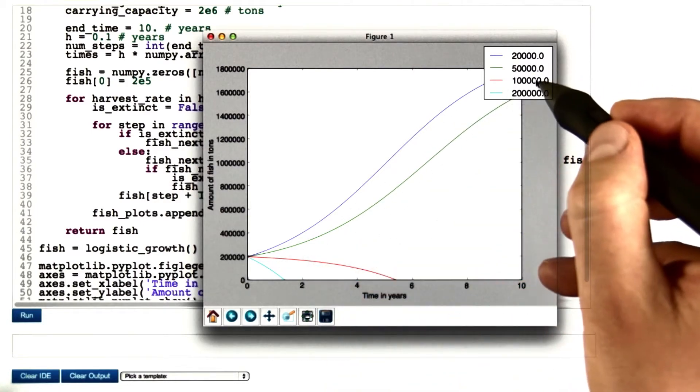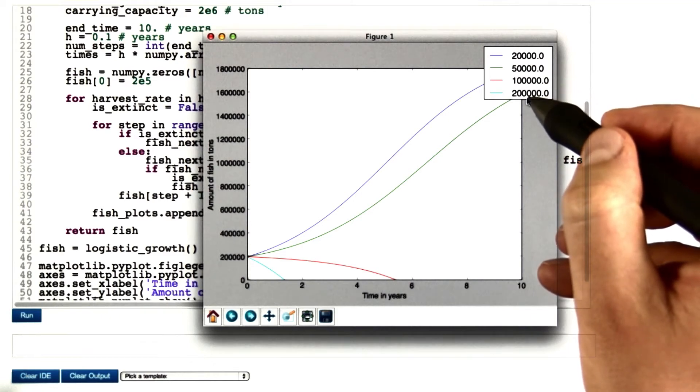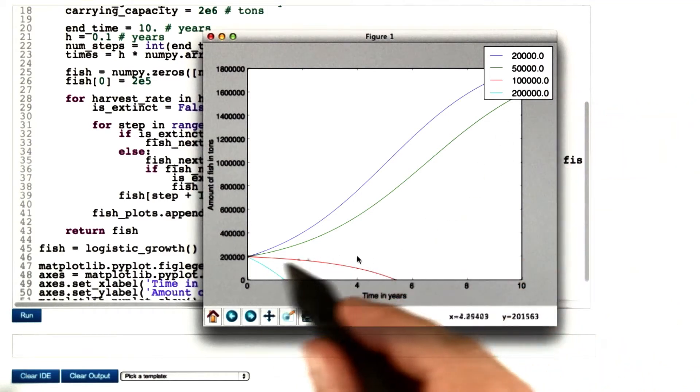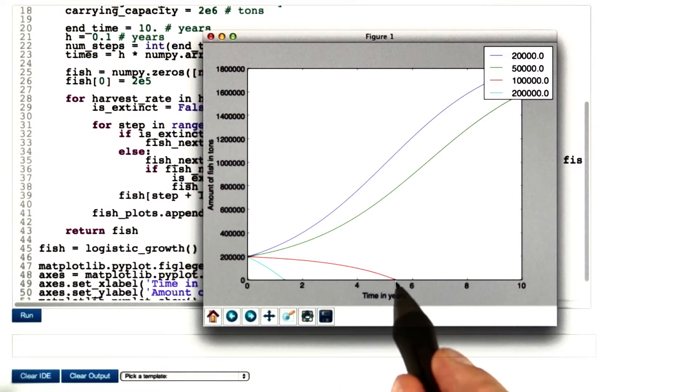However, with rates of 100,000 and 200,000 tons per year, we clearly are overfishing. Fish go extinct.